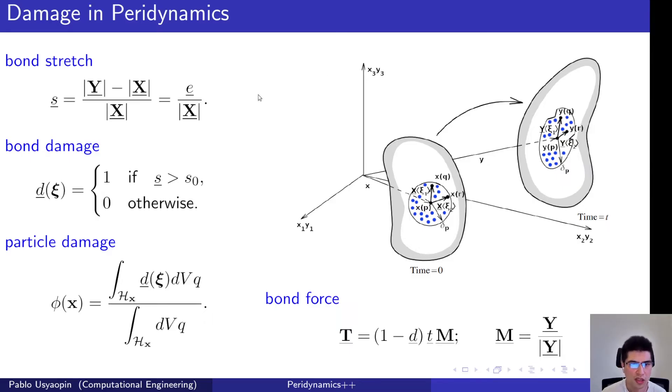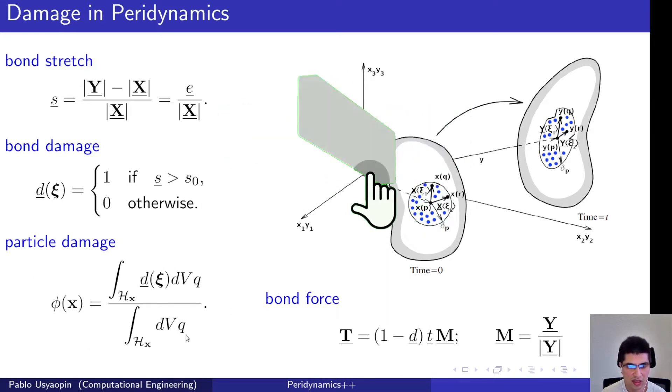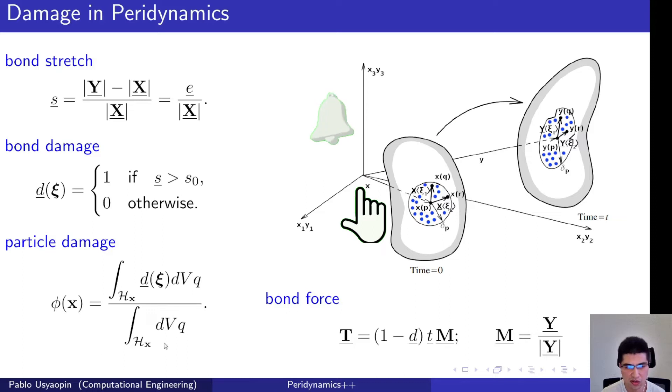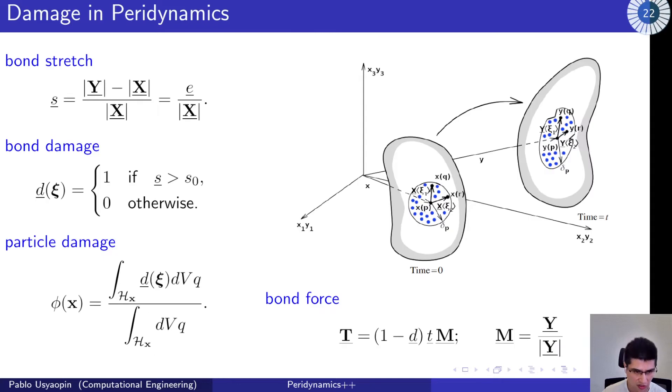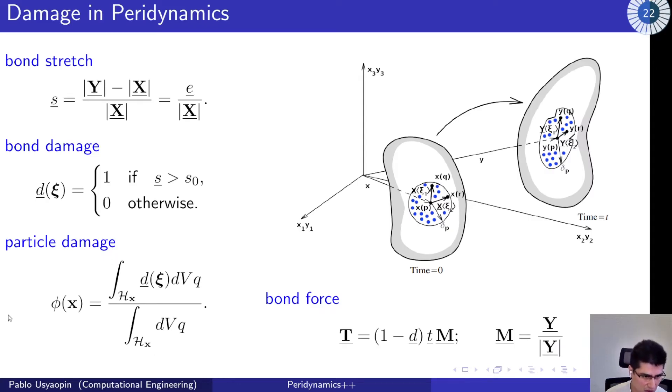Looking into the previous session, we explained how damage was actually introduced by the bond damage part, and then we could also extrapolate this to the particle level using an average as it was expressed here.